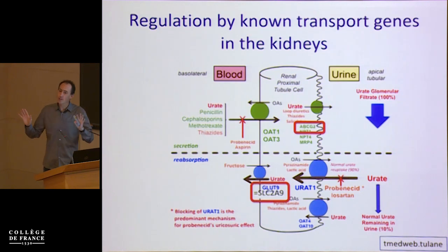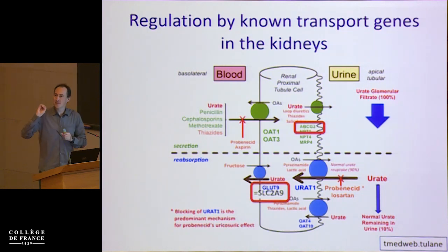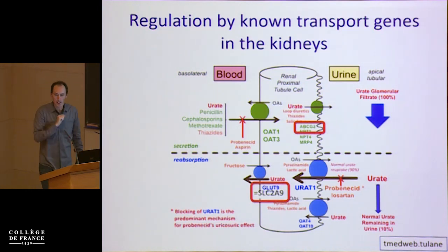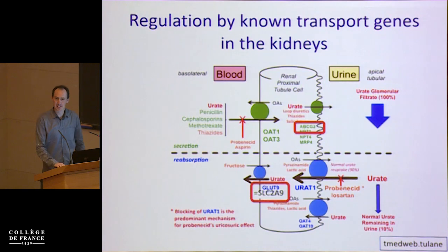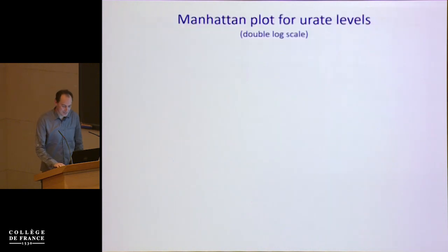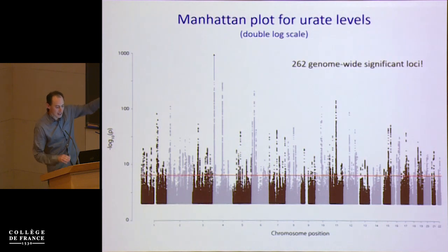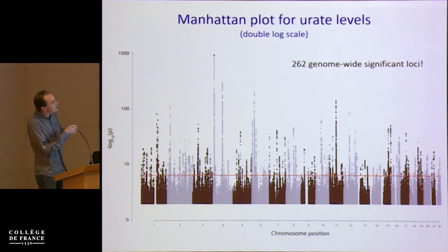We can take urate levels and do GWAS for this. So here's an audience participation question: how many genome-wide significant loci do you think we'll get for a simple trait like urate? Here's the Manhattan plot for urate on a double log scale — and there are 262 genome-wide significant loci. I've compressed the y-axis, so there are two significant outliers, which are the two transporter genes I mentioned.